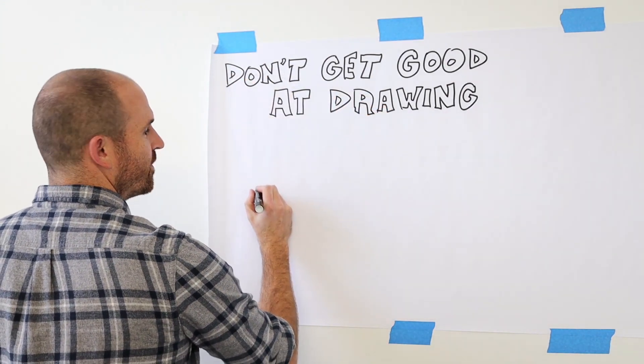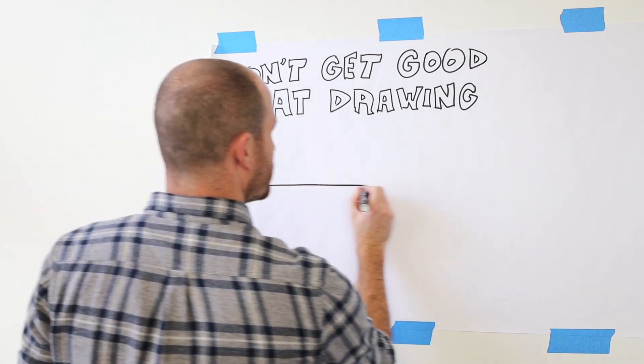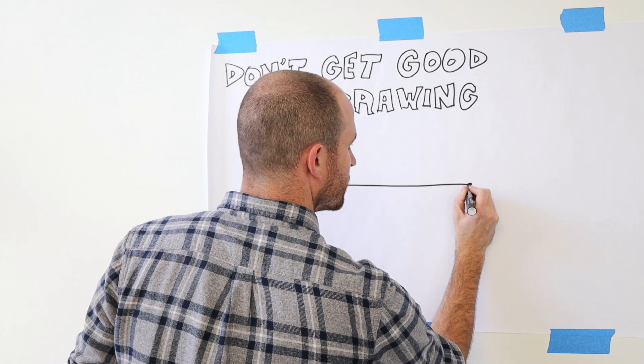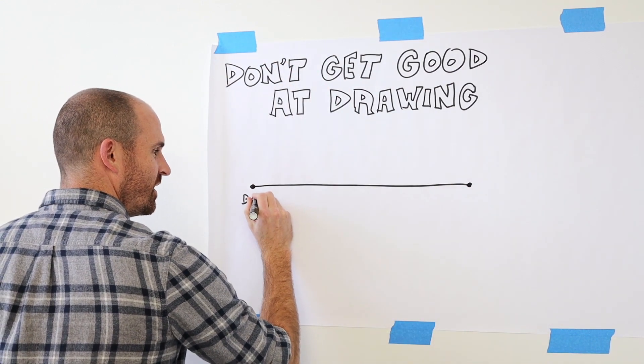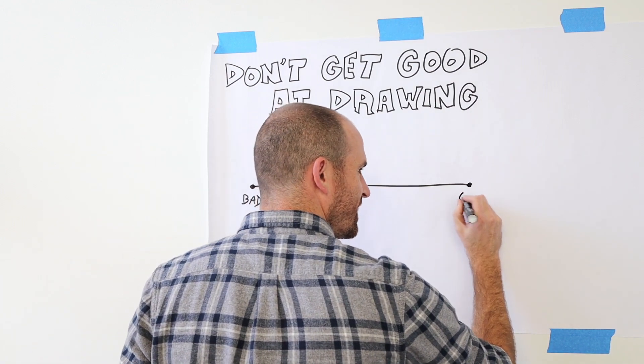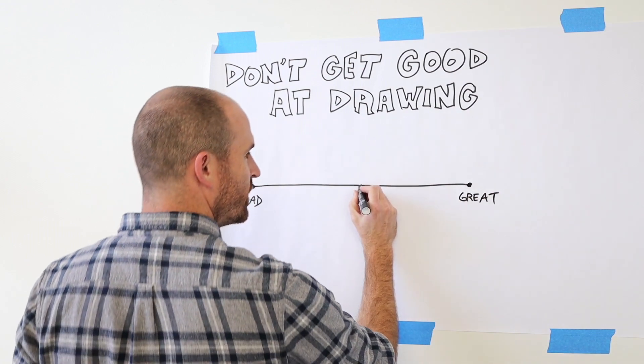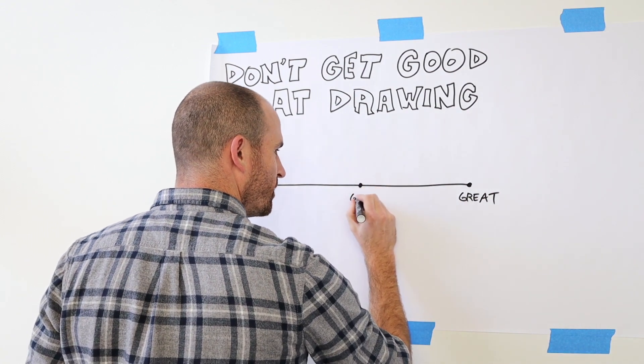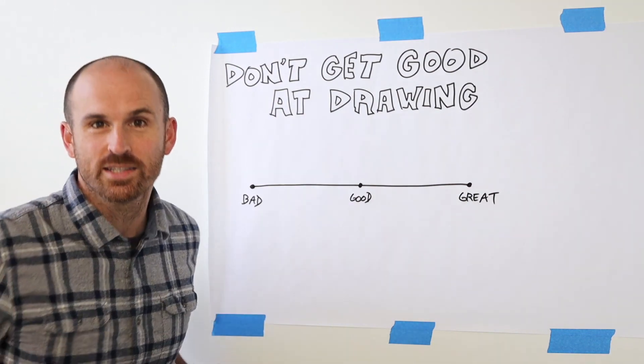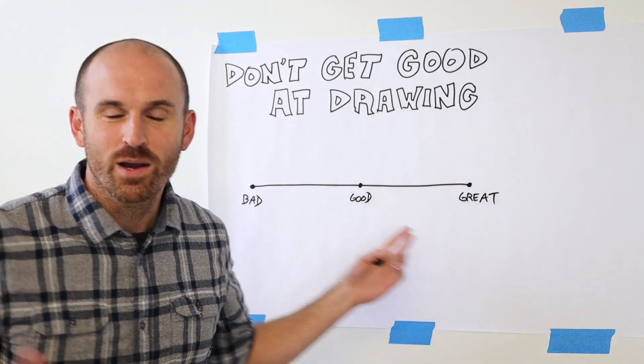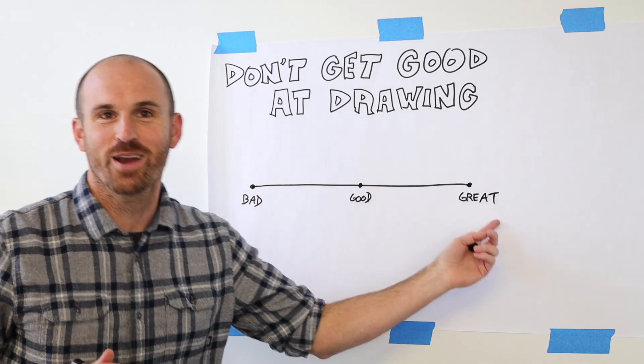Let's think of drawing as going along this spectrum from bad to great with good somewhere in the middle here. So this represents your drawing skills. Where would you put yourself? Are you a bad drawer? Are you a good drawer? Are you a great drawer?